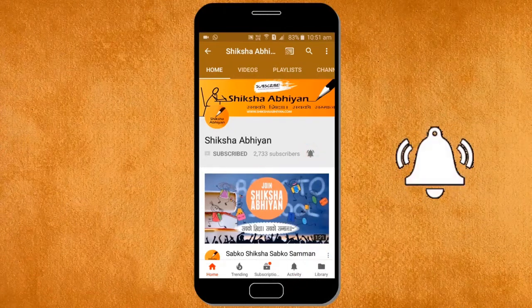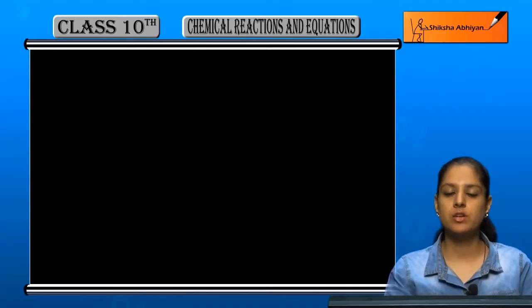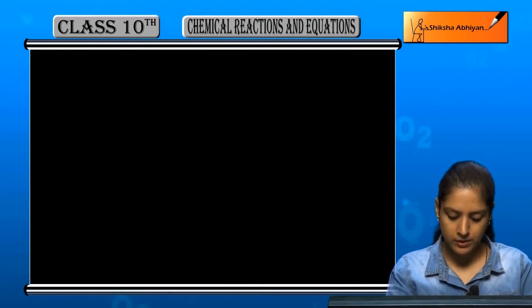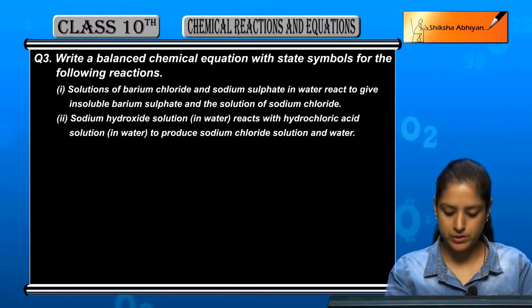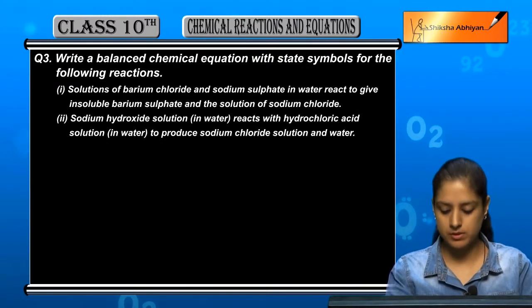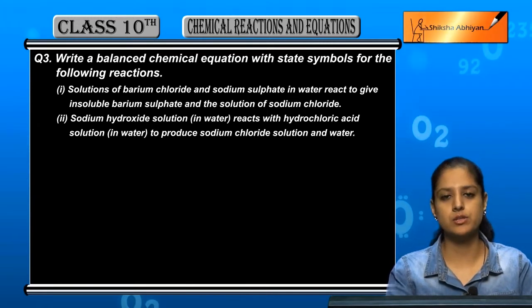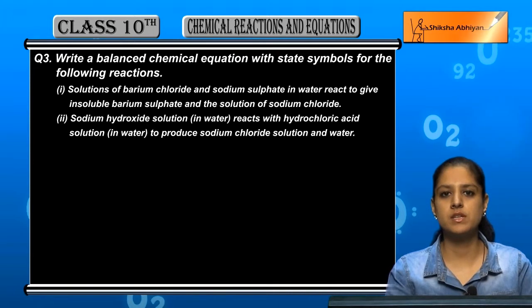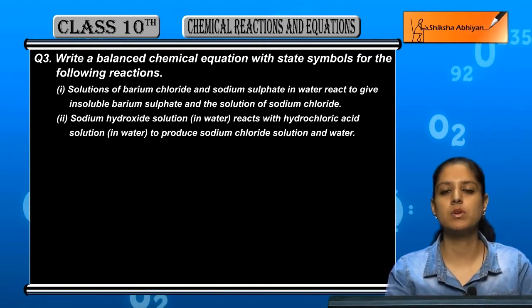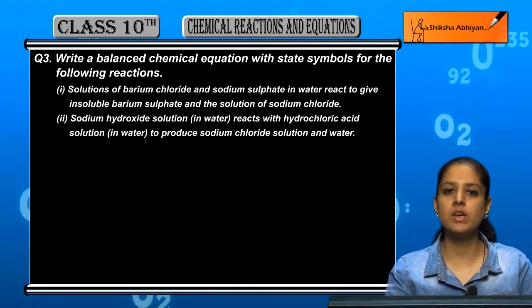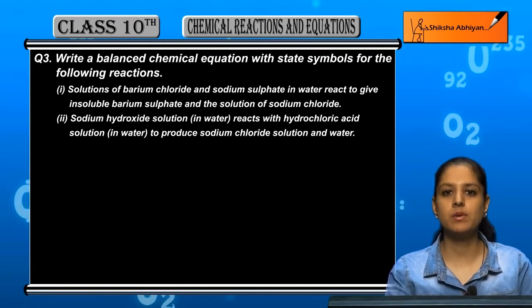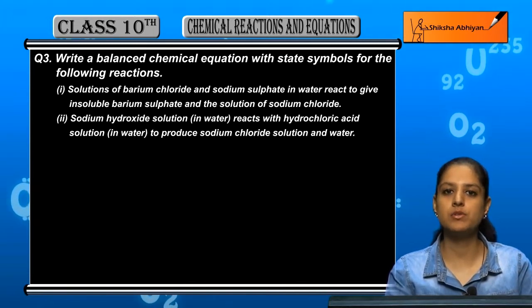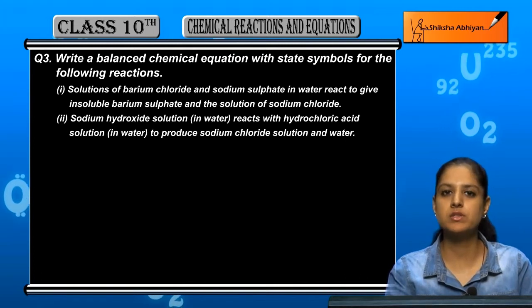Now question number three: write balanced chemical equations with state symbols of the following reactions. We have to write balanced equations in which state symbols are mentioned — whether a reactant or product is solid, liquid, gas, or aqueous solution — and write proper chemical equations.